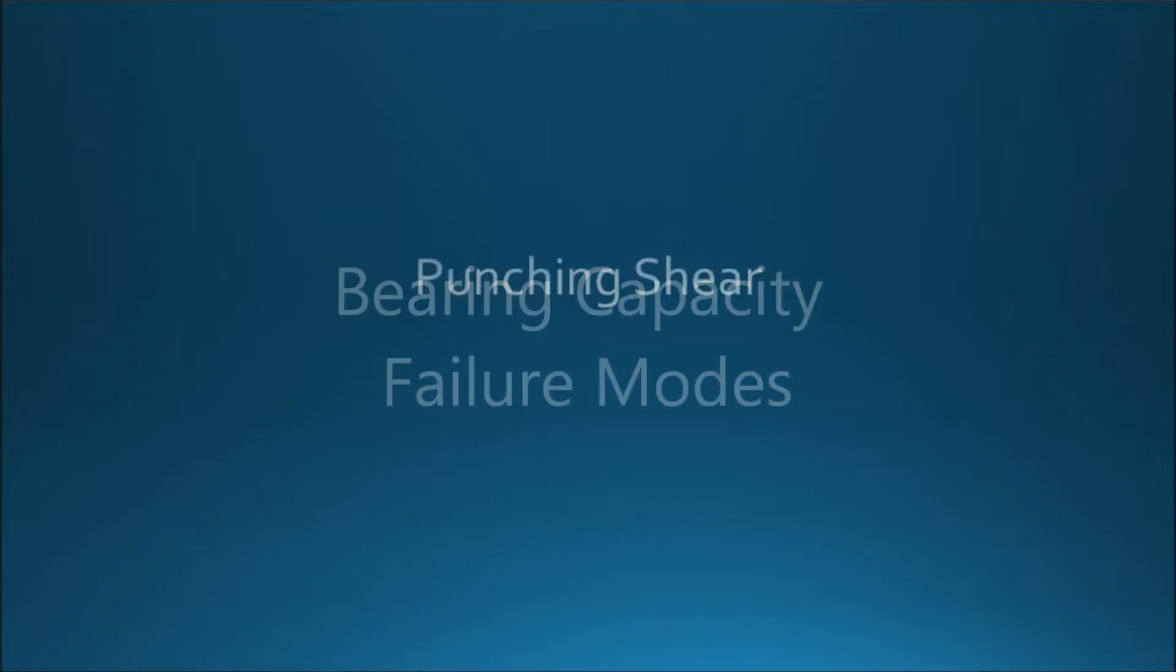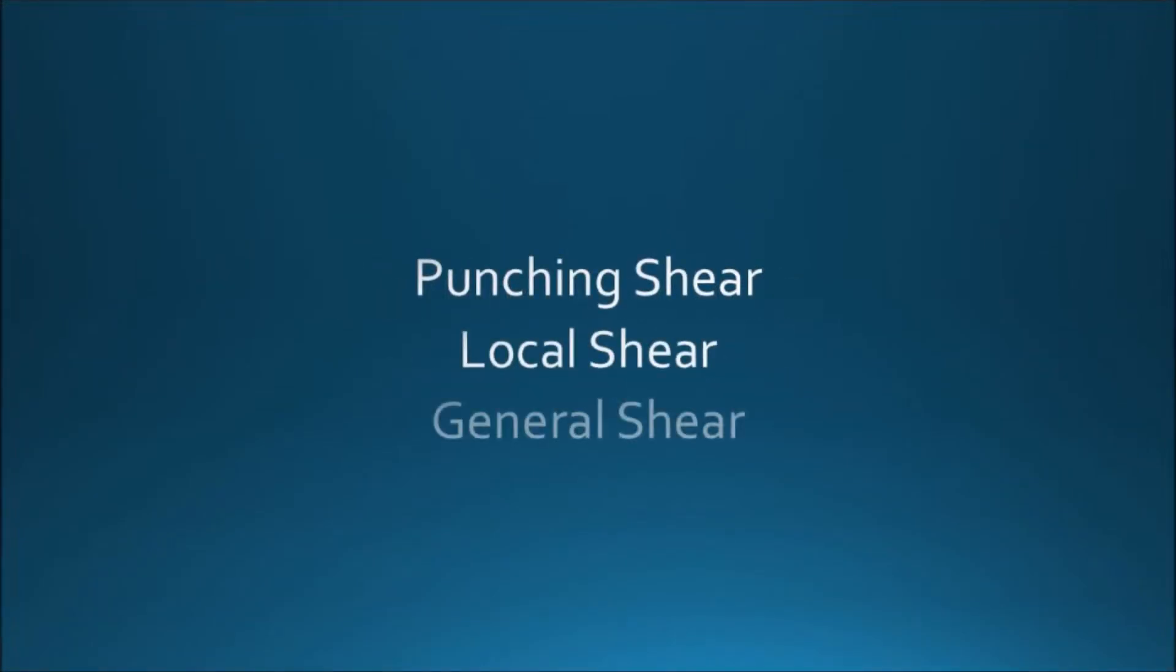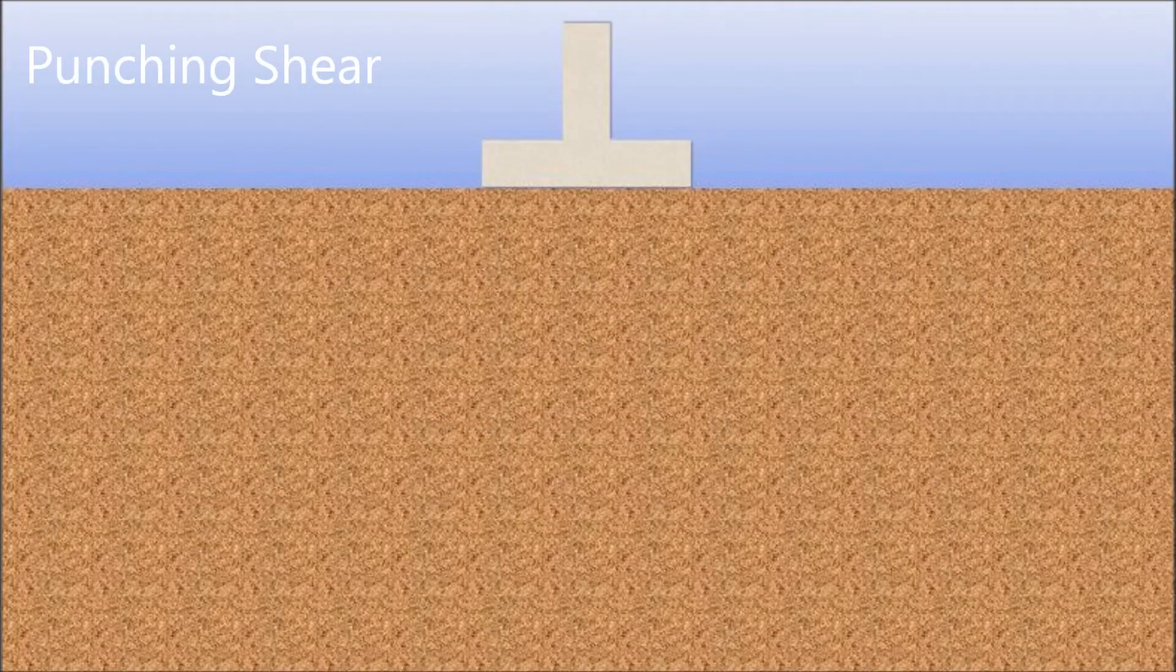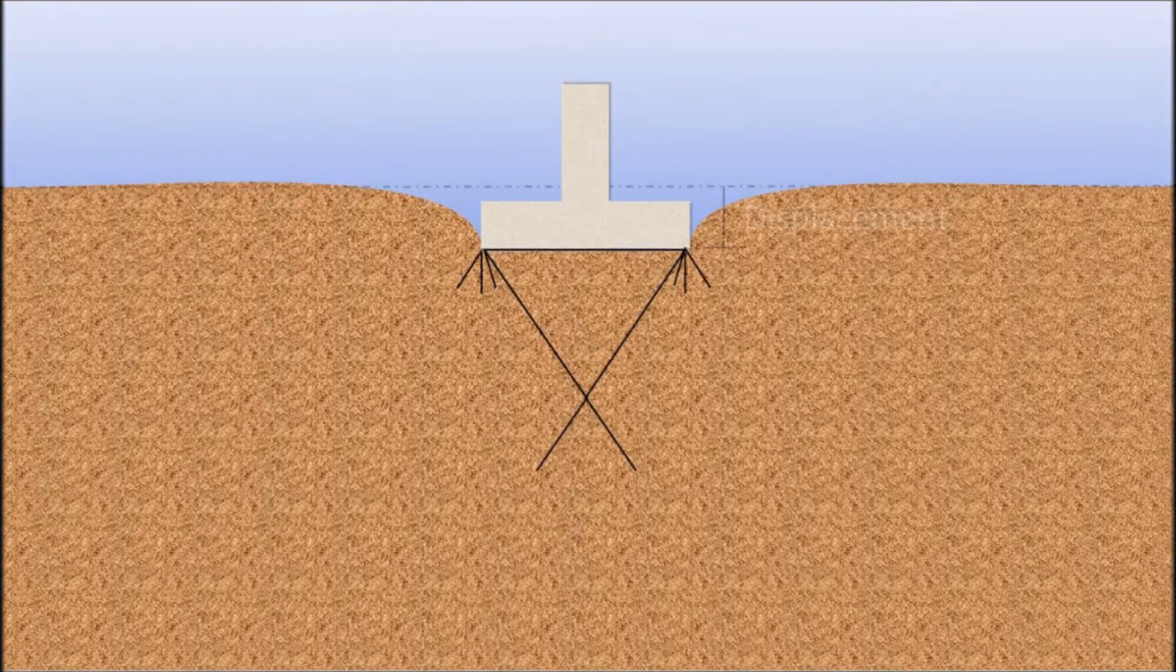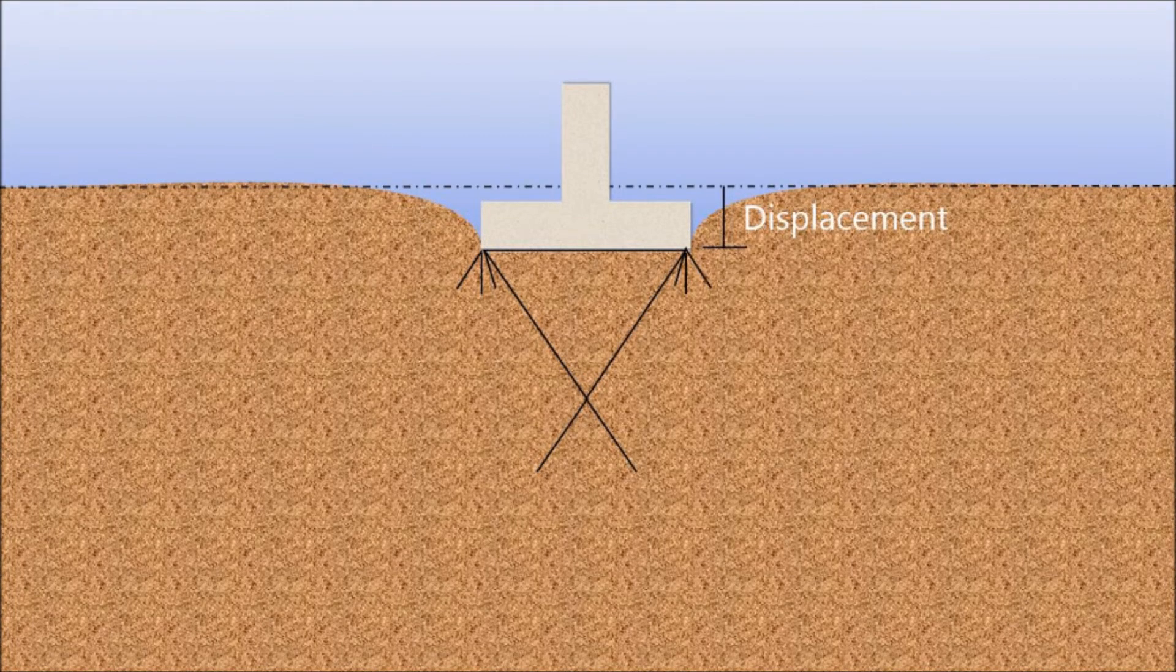There are three types of bearing capacity failures that can occur. One type of failure is punching shear. This happens in loose sands, in thin layers of strong soils underlaid by weak soils, and in weak clays which are loaded slowly.